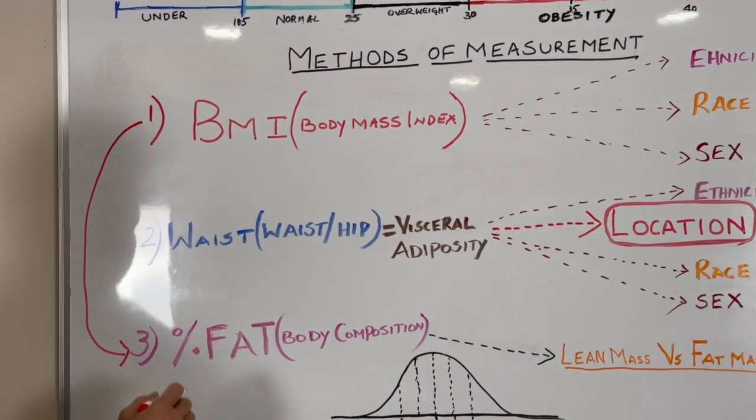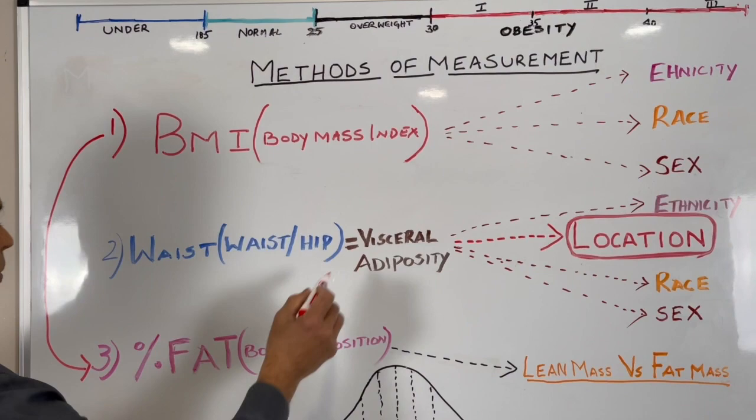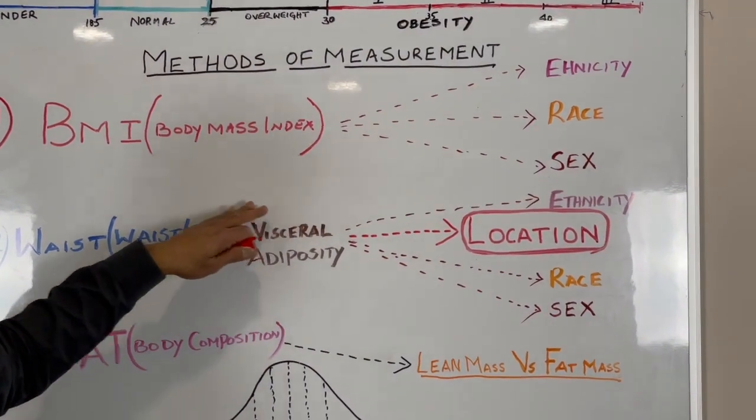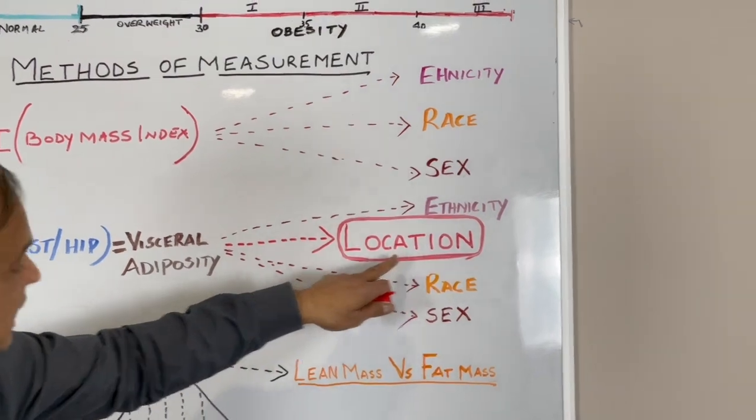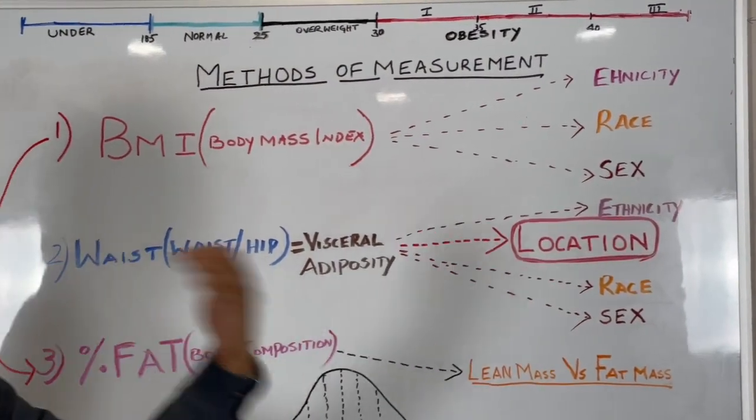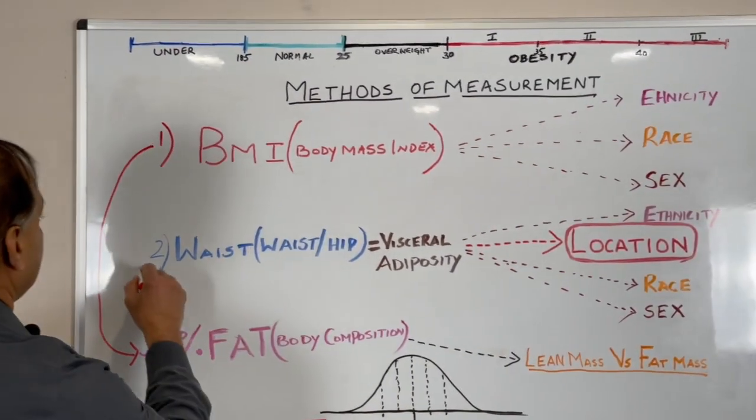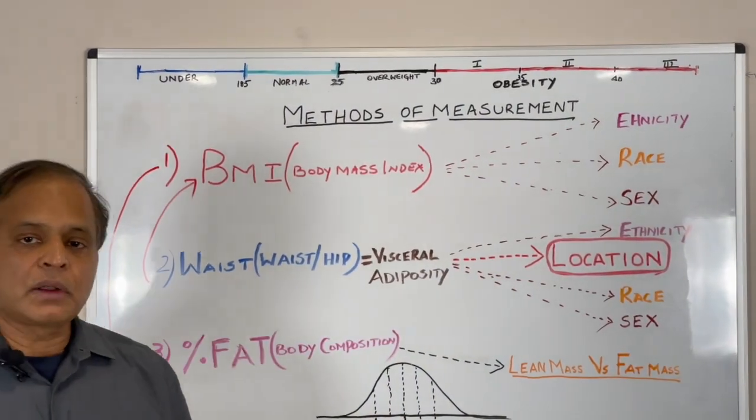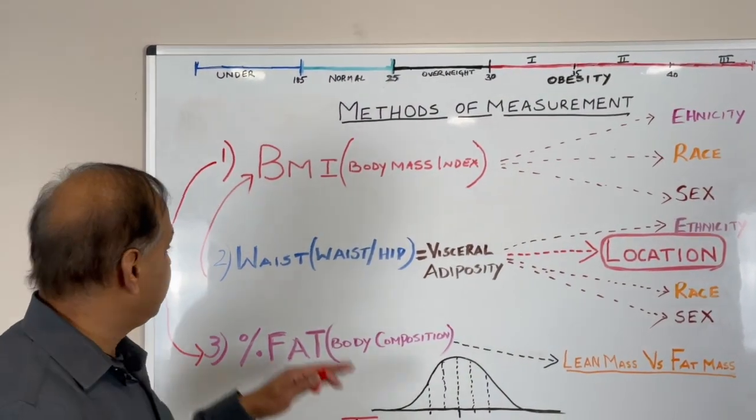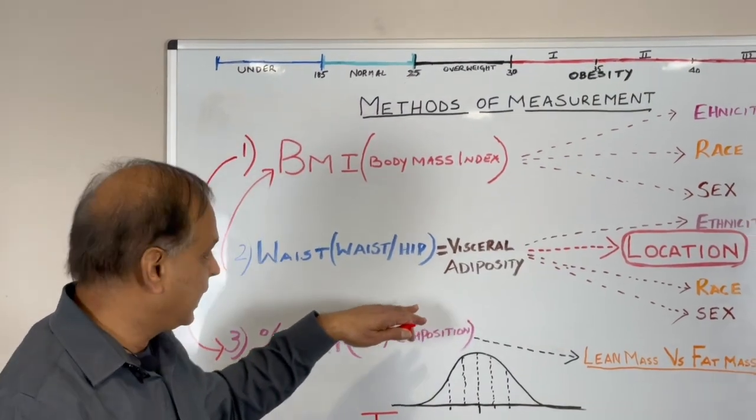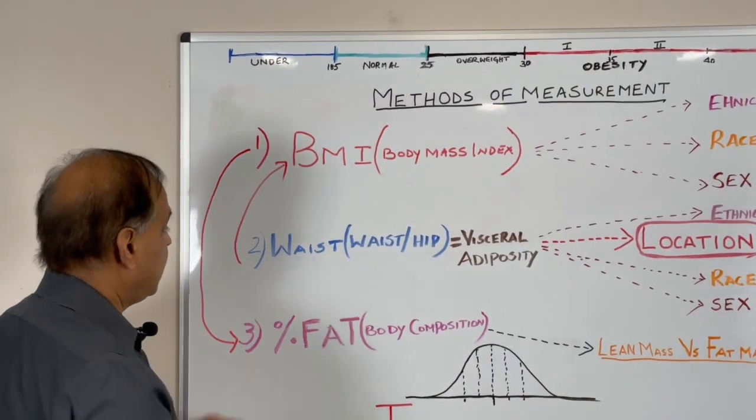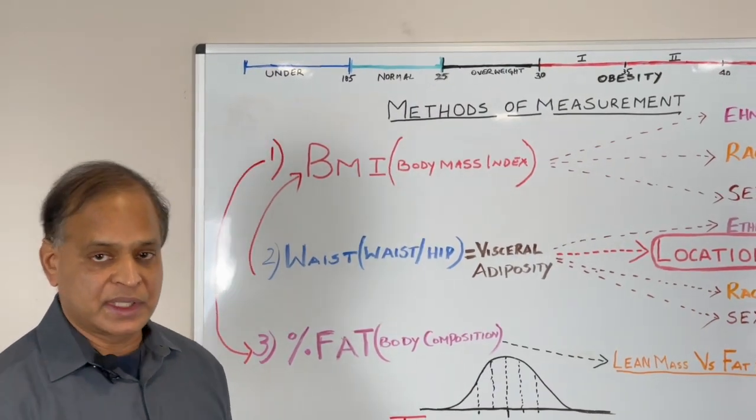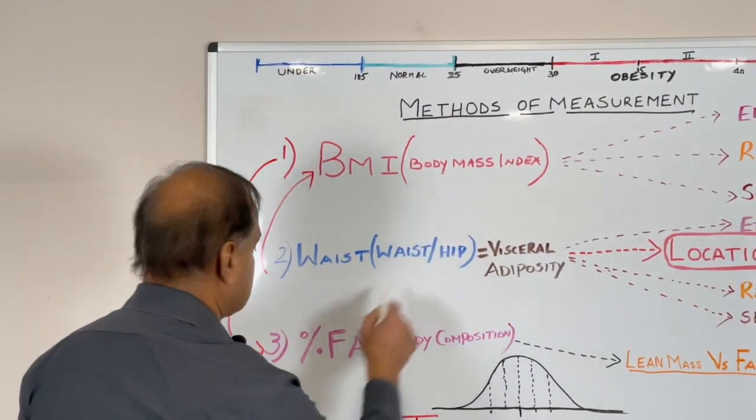We also talked about visceral adiposity, which is the waist measurement and waist ratio. The internal belly fat behaves differently—location is very important. When someone is losing weight and their BMI is coming down but the waistline isn't decreasing, that's where we connect these measurements. If waist loss isn't happening, we can check visceral fat with impedance or other advanced techniques.